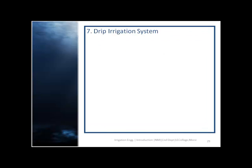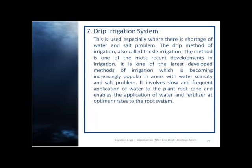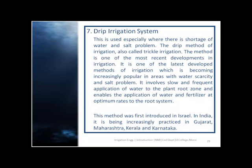The last method is drip irrigation system, also called trickle irrigation. It is used specially where there is shortage of water and salt problems. It is one of the most recent developments in irrigation, becoming increasingly popular in areas with water scarcity. It involves slow and frequent application of water to the plant root zone and enables application of water and fertilizer at optimum rates. This method was first introduced in Israel. In India it is being increasingly practiced in Gujarat, Maharashtra, Kerala and Karnataka.